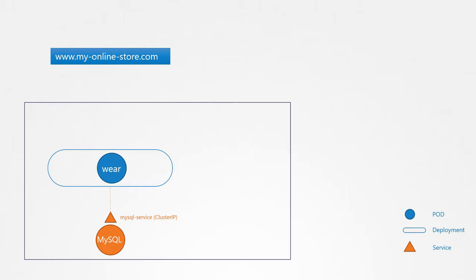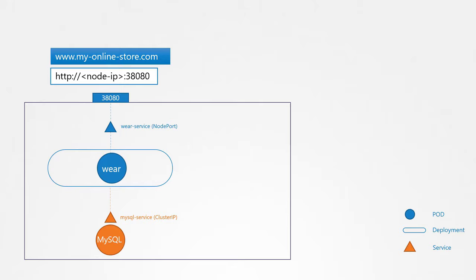Your application is now working. To make the application accessible to the outside world, you create another service, this time of type NodePort, and make your application available on a high port on the nodes in the cluster. In this example, port 38080 is allocated for the service. The users can now access your application using the URL HTTP colon slash slash IP of any of your nodes, followed by port 38080. That setup works and users are able to access the application.